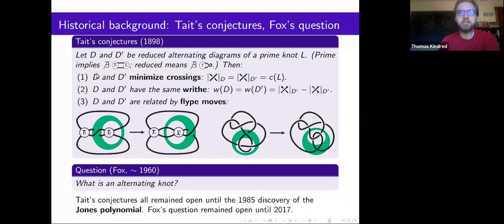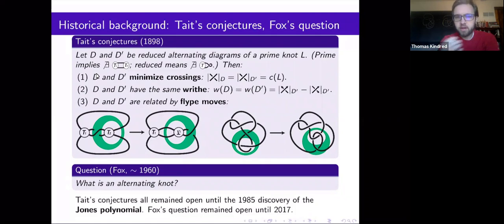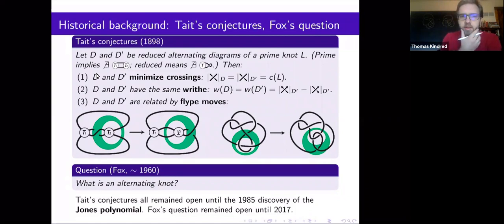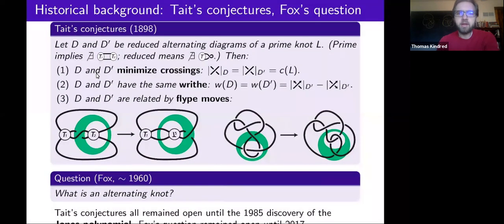Tait's conjectures turned out to be true, but also turned out to be very difficult to prove. In fact, it took almost 100 years to prove them, and there was very little progress. They were unproven until the Jones polynomial was discovered in the 80s. The conjectures are all about alternating knot diagrams, in large part because the first many knots in the knot table are alternating.